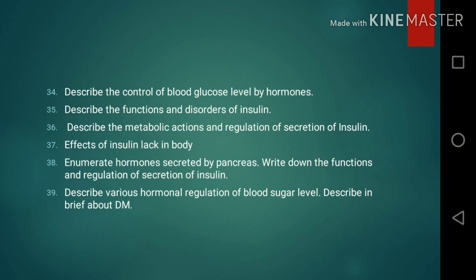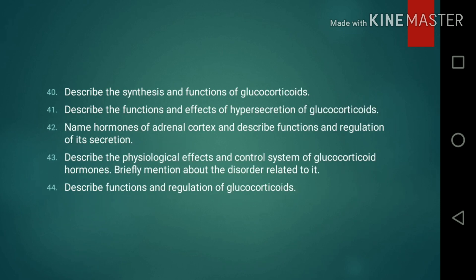Question 35: Describe the functions and disorders of insulin. Question 36: Describe the metabolic action and regulation of secretion of insulin. Question 37: Effects of insulin lack in the body. Question 38: Enumerate hormones secreted by the pancreas; write down the functions and regulation of secretion of insulin. Question 39: Describe various hormonal regulation of blood glucose level; describe briefly about diabetes mellitus. Question 40: Describe the synthesis and functions of glucocorticoids. Question 41: Describe the functions and effects of hypersecretion of glucocorticoids.